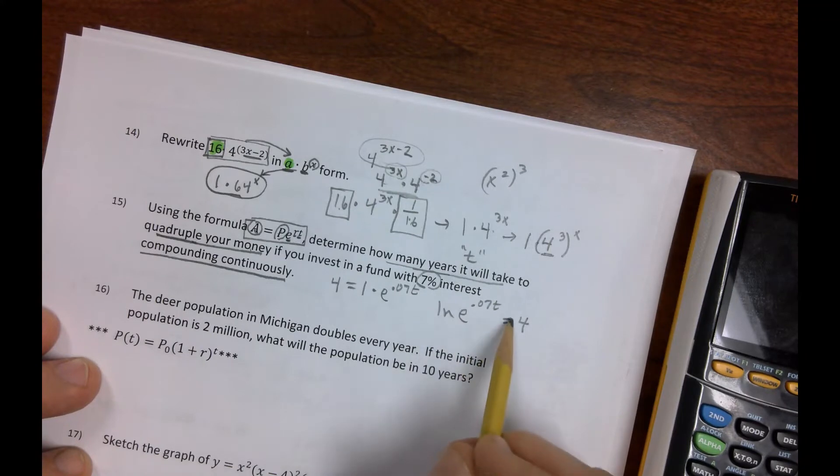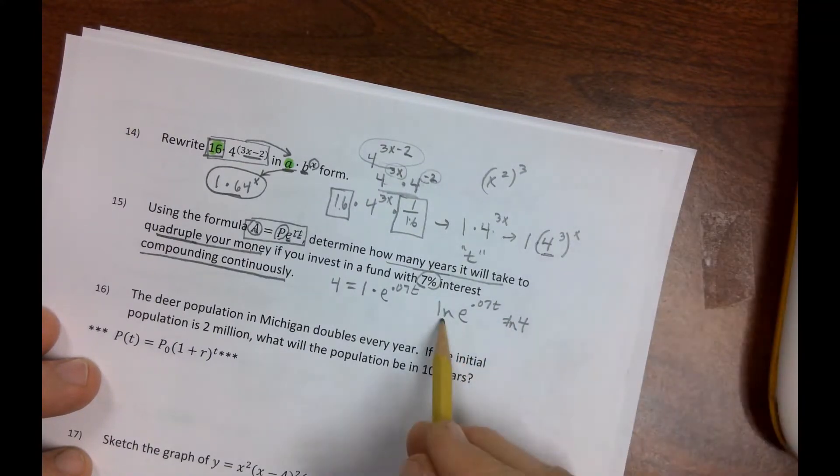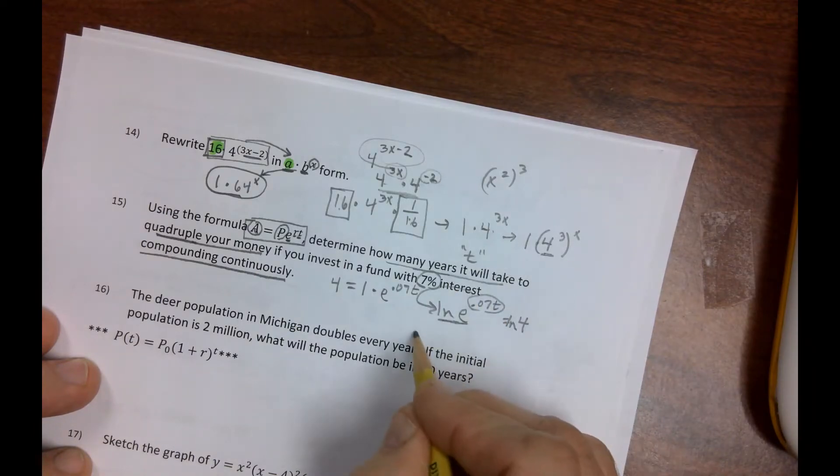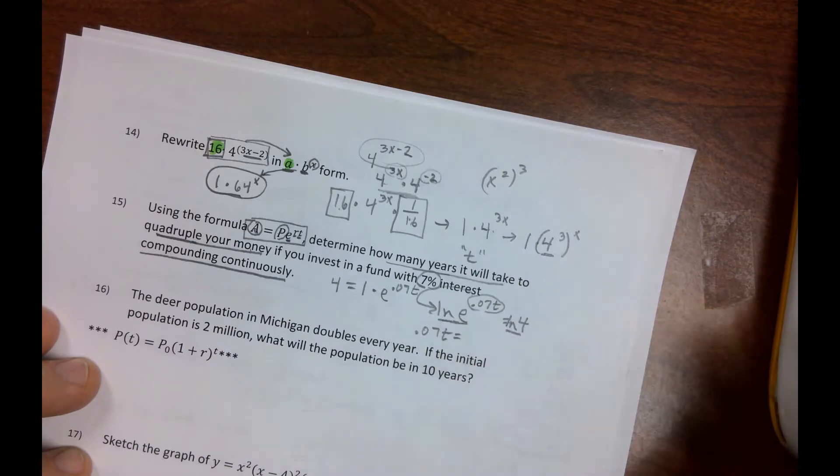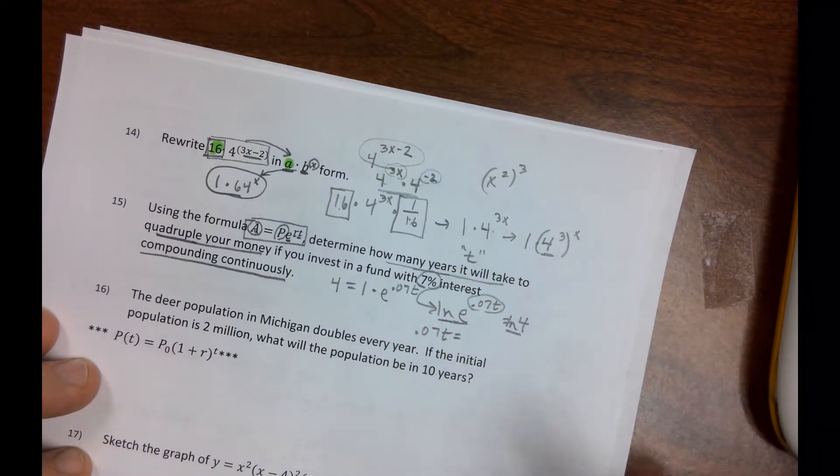Well, you got to slap a natural log on there, slap a natural log on there. Remember, the natural log of E is 1, but this comes down in front of it. So it's .07T equals natural log of 4 is 1.38.